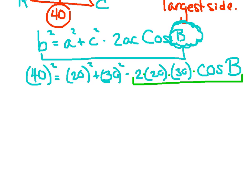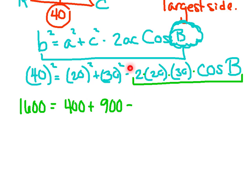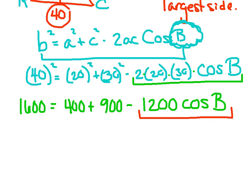40 squared is 1600, equals 20 squared which is 400, plus 900, minus — you can multiply these because they're all attached together. Keep these terms together; I'm leaving the minus sign, so don't include that. Doing 2 times 20 times 30, I get 1200 cosine B. This cosine B is still attached to somebody — it is attached to the 1200. Bracket those at the bottom; you can't break those up yet.